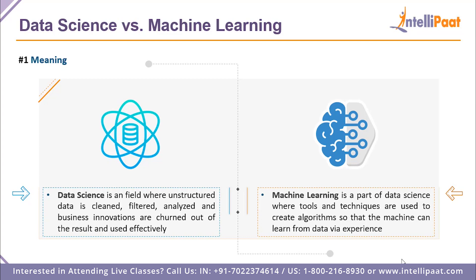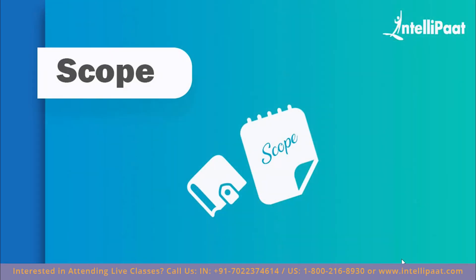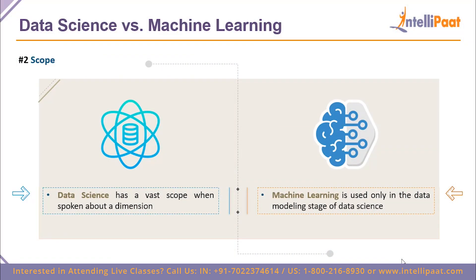Regarding scope: data science has a vast scope — it has a strong foothold everywhere, and every data-driven company uses data science in one way or another. Machine learning, being a part of data science, specifically covers the data modeling stage. Once the data modeling stage is completed, the machine learning portion of data science is done — and this is one of the key differences between the two.